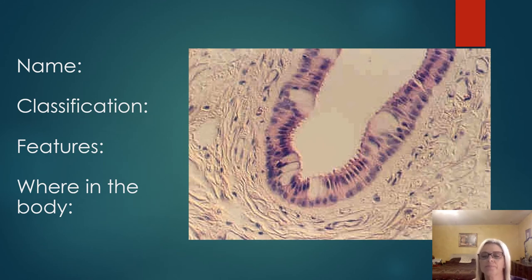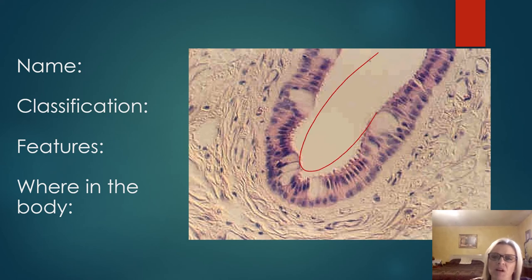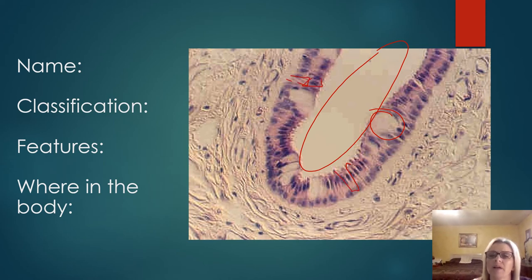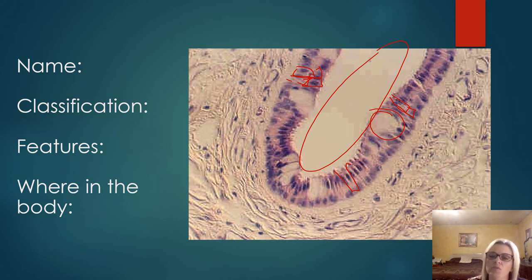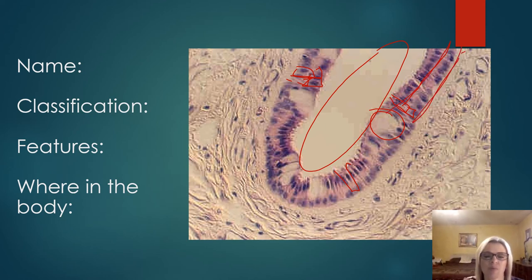This is a kind of difficult one — stop and see if you can figure out what this is. I've got goblet cells, I've got a lumen, so I know this is epithelium. It looks very much like columnar, but here it almost looks like I have two layers. You've got to look at the overall picture. This is actually one of those rare findings of stratified columnar epithelium. The nuclei are arranged pretty evenly, along the same plane — not pseudostratified.